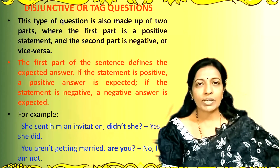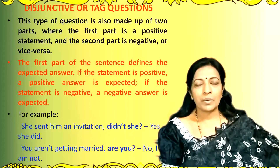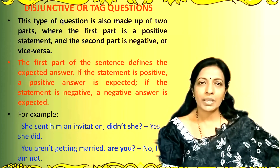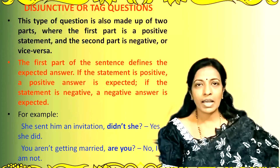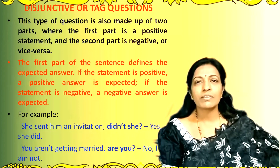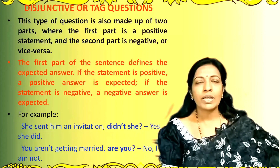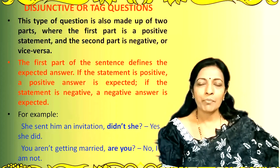Let us take up another example. 'You aren't getting married, are you?' In this sentence, the first part — 'You aren't getting married' — is a negative sentence. The second part — 'are you' — which is the question tag, is positive. Since the first part is a negative sentence, the answer expected will also be negative, and the answer to such a question will be 'No, I am not.'